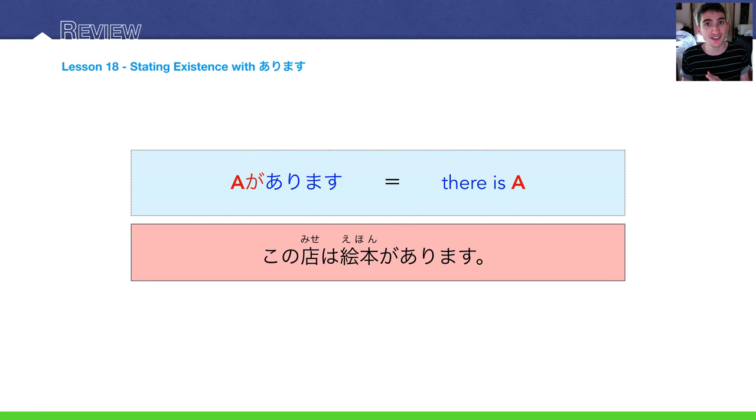You can state what has something. For example, in the key sentence here, kono mise wa ehon ga arimasu. So, ehon, remember, is picture book, or a book with pictures, usually a children's book, ga arimasu. There is, or there are, picture books.